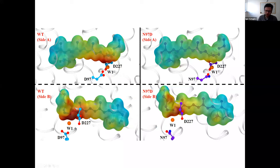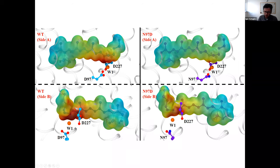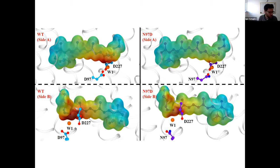We can combine these protein electrostatic maps with knowledge about the charge distribution in retinal to get a very accurate prediction of the absorption maximum. This will be the subject of my research talk, where I will show different mutants of proteorhodopsin and how introducing mutations changes the electrostatic potential on the retinal. That was the first tutorial part about spectral tuning in retinal proteins.